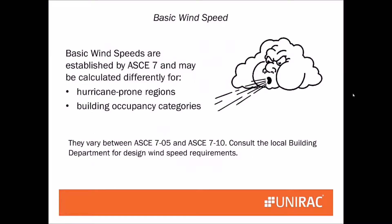The basic wind speed is established by ASCE 7 and is much higher than most homeowners would expect. It can sometimes be calculated differently for hurricane-prone regions and by building occupancy. There are currently two versions of ASCE in use, so please consult the local building department for the design wind speed they expect you to design to.